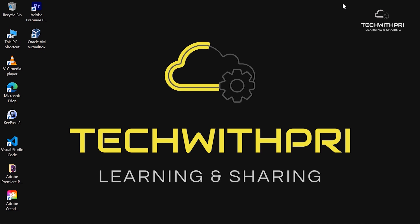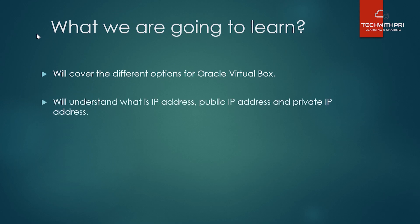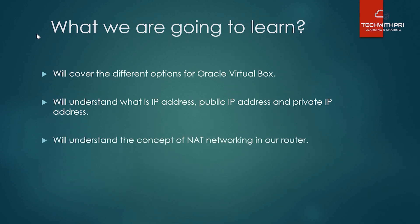Let's see what we are going to learn today. First, we'll cover the different options for Oracle VirtualBox — there are some important things that need to be covered there. Then we'll understand what is an IP address, public IP address, and private IP address. This is very important not only for this video but also when we work on cloud. Finally, we'll understand the NAT concept and NAT networking — how it works in our router — and in the next video we'll see how it works in the virtual machine.